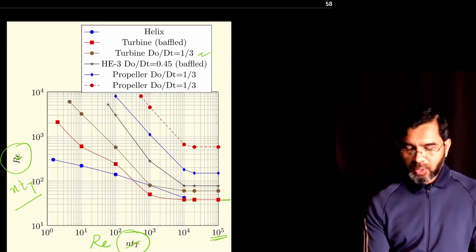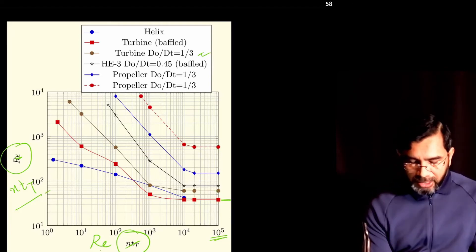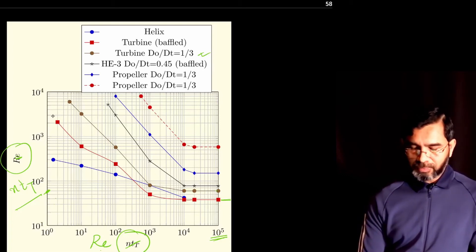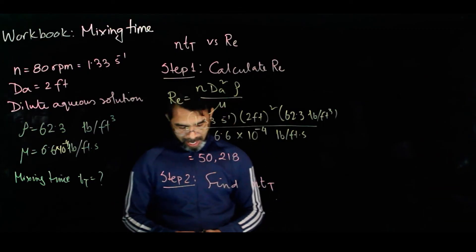So for this case, we'll use this graph and we get the value here. We have 10, 20, 30, 40, 50, and the nTt value is 60 for this case.